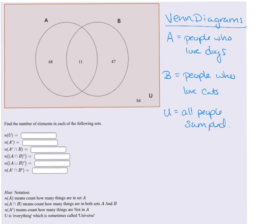When we break this apart into a Venn diagram, A over here, the 68, these would be the people who love dogs only. And B over here, this 47, these would be the people who love cats only. But like myself, the folks in the middle here, the 11, these guys love both cats and dogs.